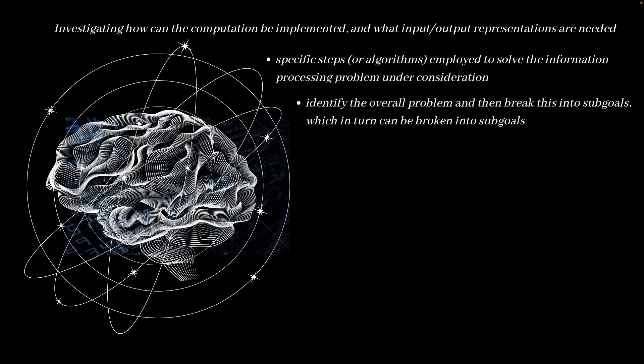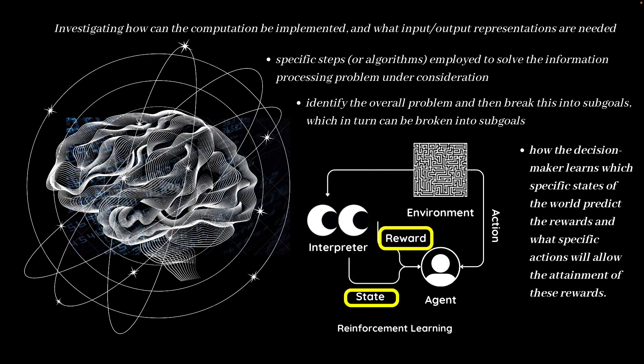In the context of reinforcement learning, following the computational goal of maximizing rewards and minimizing punishment, the algorithmic level answers how the decision maker learns which specific states of the world predict the rewards and what specific actions will allow the attainment of these rewards.